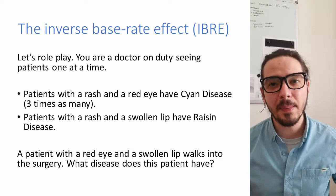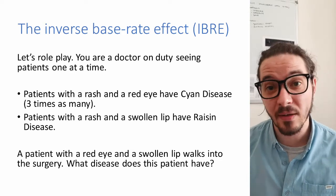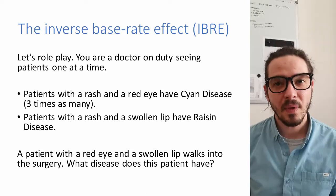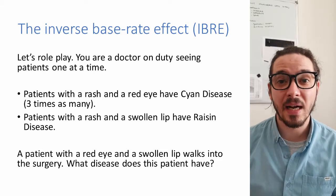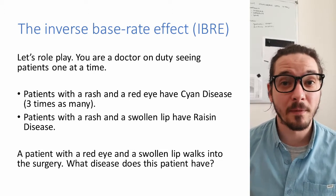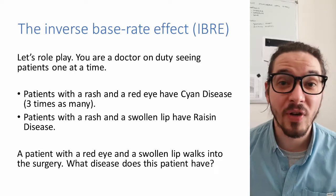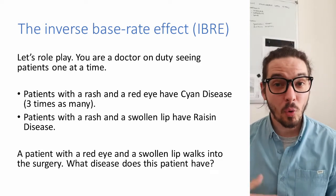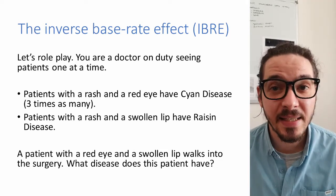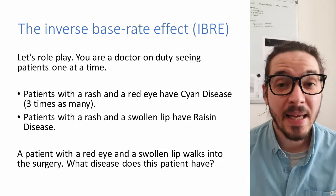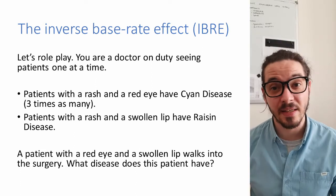As you keep encountering more and more patients, you figure out that both diseases share a single symptom — rash — and each disease has its own unique symptom. Red eye is symptomatic of the cyan disease and swollen lip is symptomatic of the raisin disease. You also figure out that there are three times as many cases of cyan disease as raisin disease, so there is a common disease and a rare disease.